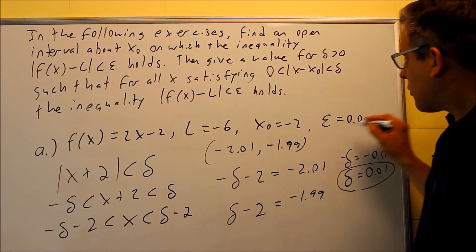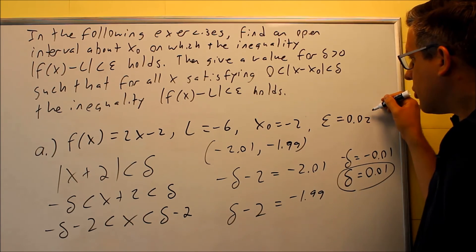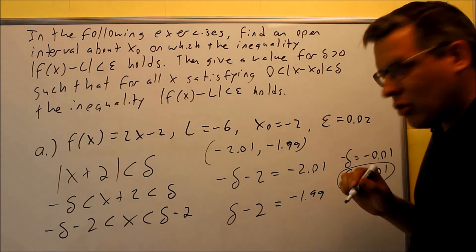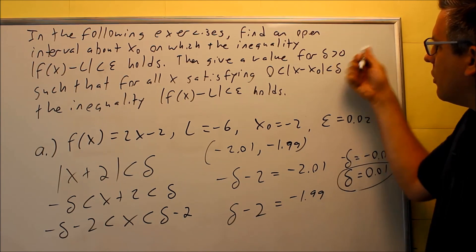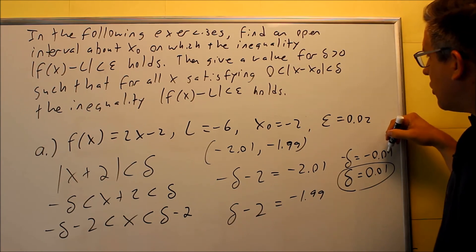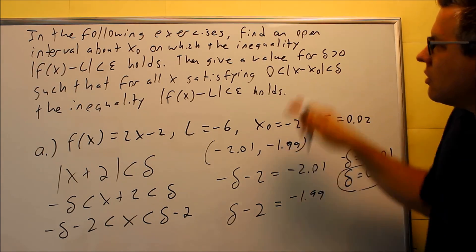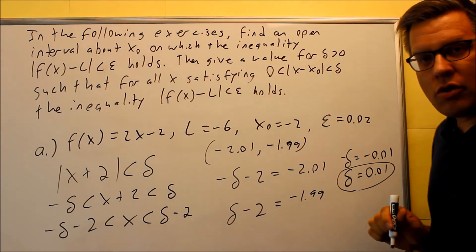So if the epsilon is given as 0.02 for this inequality to hold, that means this is what your delta has to be. So we have delta greater than 0, which it is, that satisfies this equation, allowing that inequality to hold.